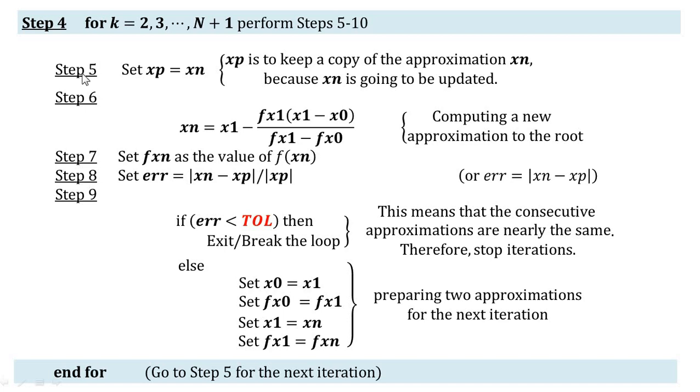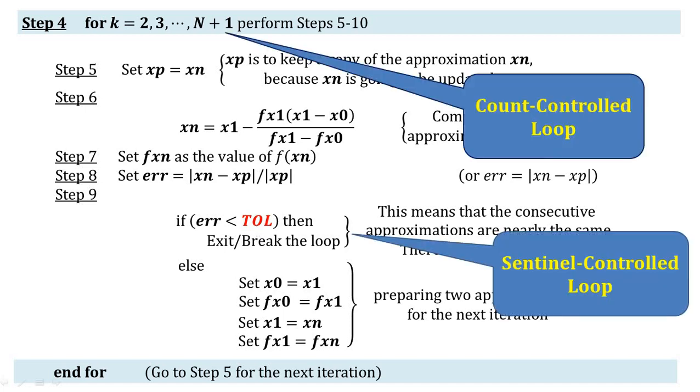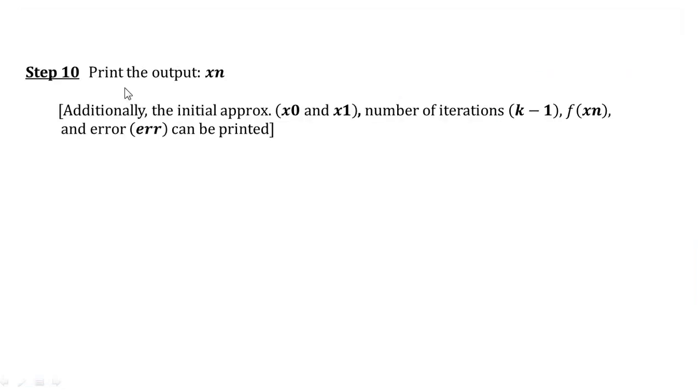The loop cycle is complete and we are going to the next iteration. That is from step 5 we will repeat this process again and again until either k has crossed the limit of N plus 1 or error has become less than tolerance, whichever condition is satisfied first the loop will be terminated. This loop of iteration has two features: first of all because of this for loop and this count limit it is acting as a count control loop, and because of this termination condition of convergence it is acting as sentinel control loop.